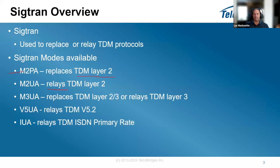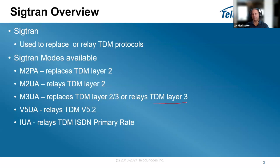M2UA takes the TDM layer 2 data and sends it over IP. Then you can use M3UA, which is one level above M2UA and M2PA. It replaces layers 2 and 3 of the TDM side, or it relays the TDM layer 3, which is MTP3.